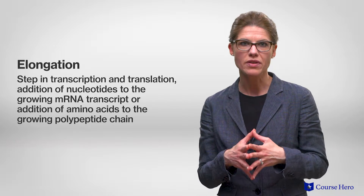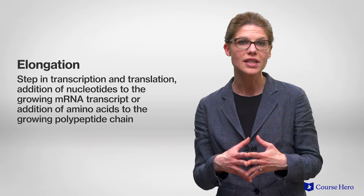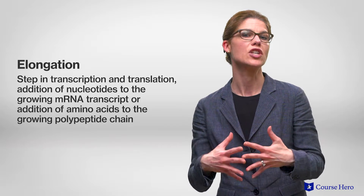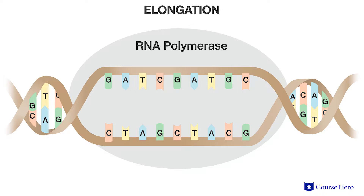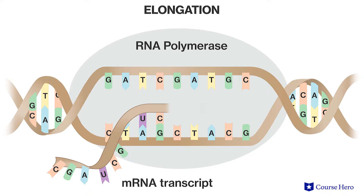Elongation is a step in transcription that results in the addition of nucleotides to the growing mRNA transcript. The RNA polymerase unwinds the DNA and reads it from the three prime to the five prime end. RNA nucleotides bind to the unwound DNA following base pairing rules, so cytosine pairs with guanine and uracil pairs with adenine. The polymerase catalyzes the formation of bonds between nucleotides, resulting in an mRNA sequence complementary to the DNA sequence of the gene.